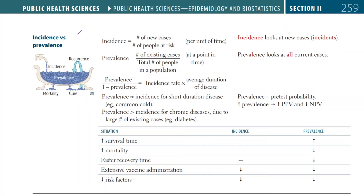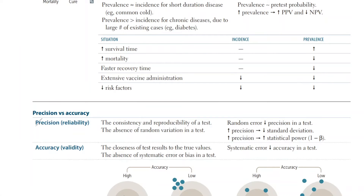Welcome back to another Biostats video. In this video, we'll be talking about incidence, prevalence, precision, and accuracy, otherwise known as reliability and validity.